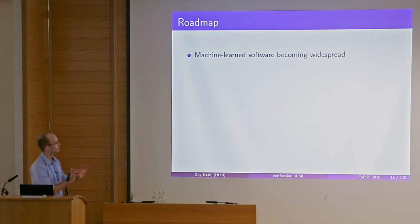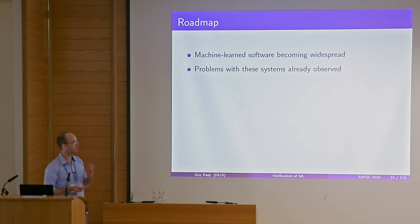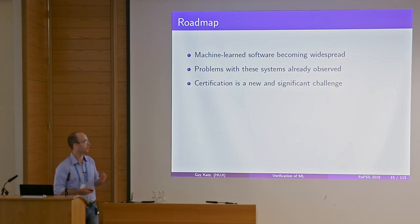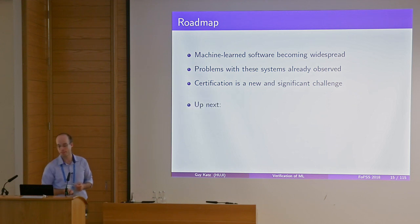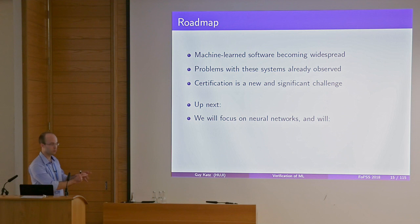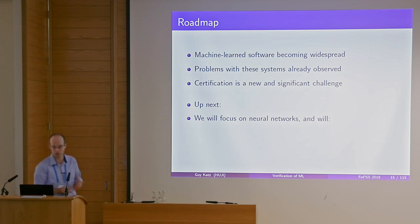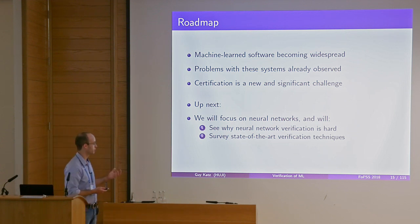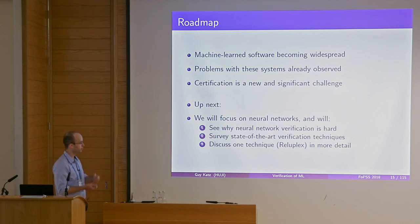Hopefully this is sufficient motivation: software is everywhere, people are using machine learning to write it now, and some problems have already been observed — this is not theoretical. Certification of these systems is a new and very significant challenge with a lot of industry interest. In the next parts of the presentation, I'll focus on neural networks specifically — explaining why verification of neural networks is a hard problem, surveying what people have been up to, and then discussing in detail one technique called RelupPlex, which I was involved in.